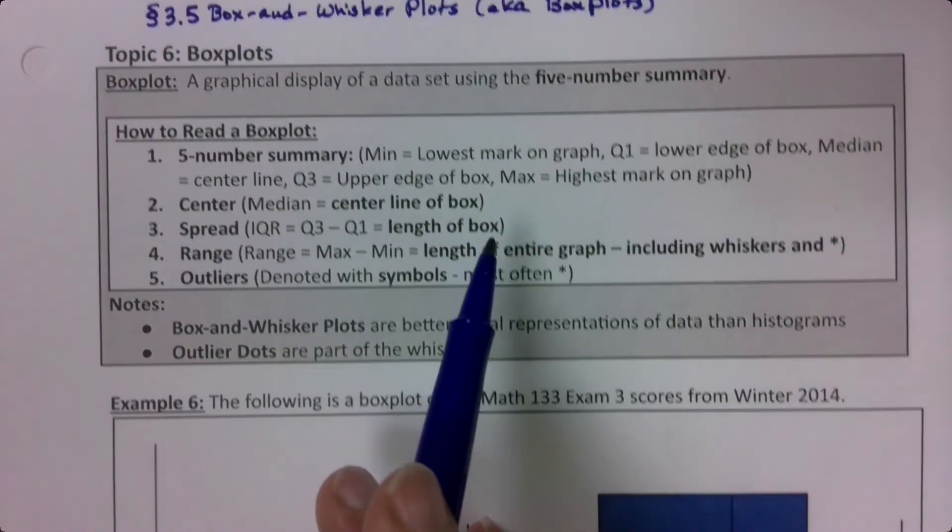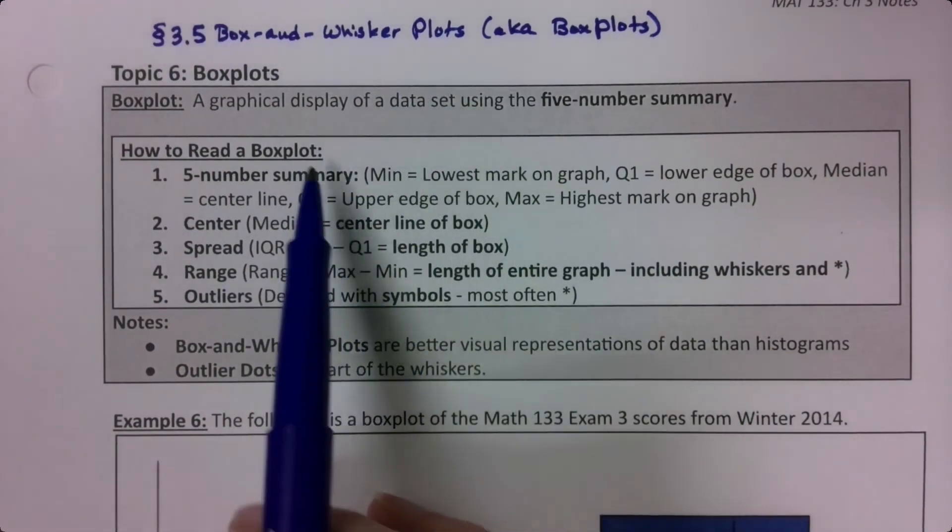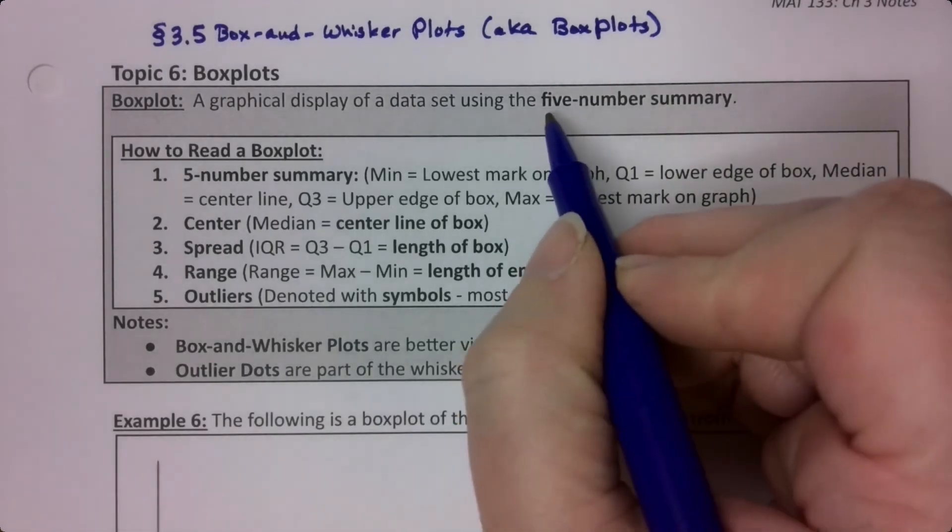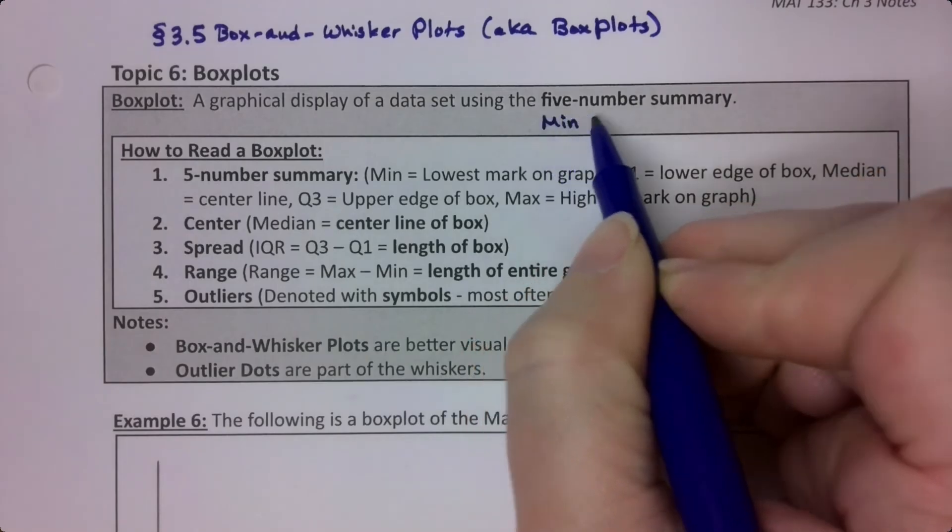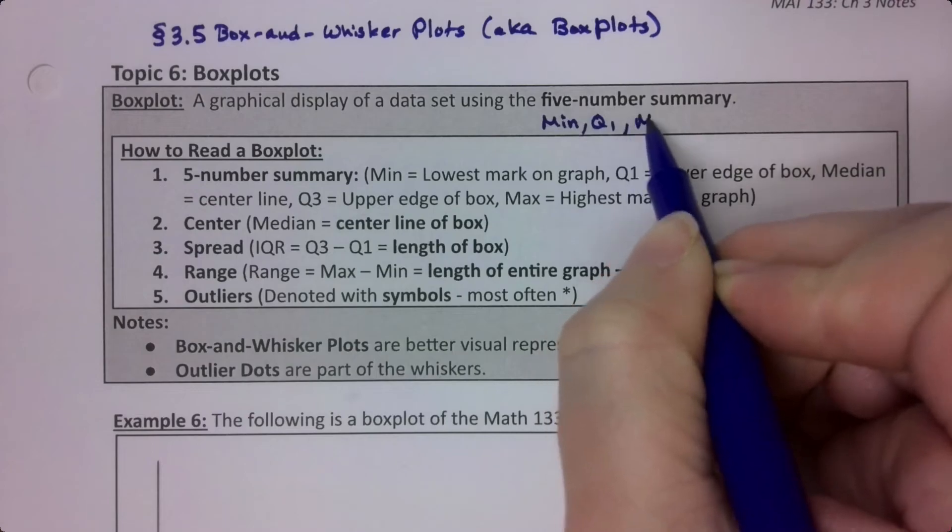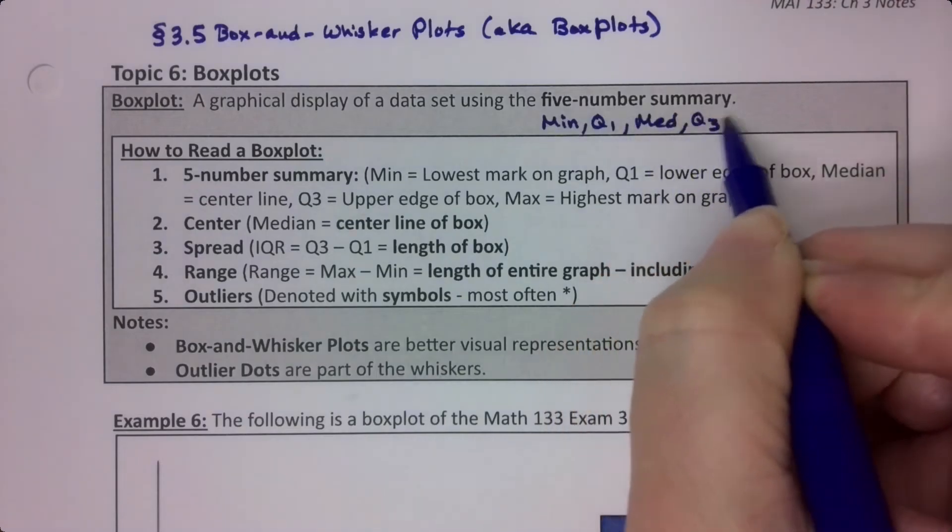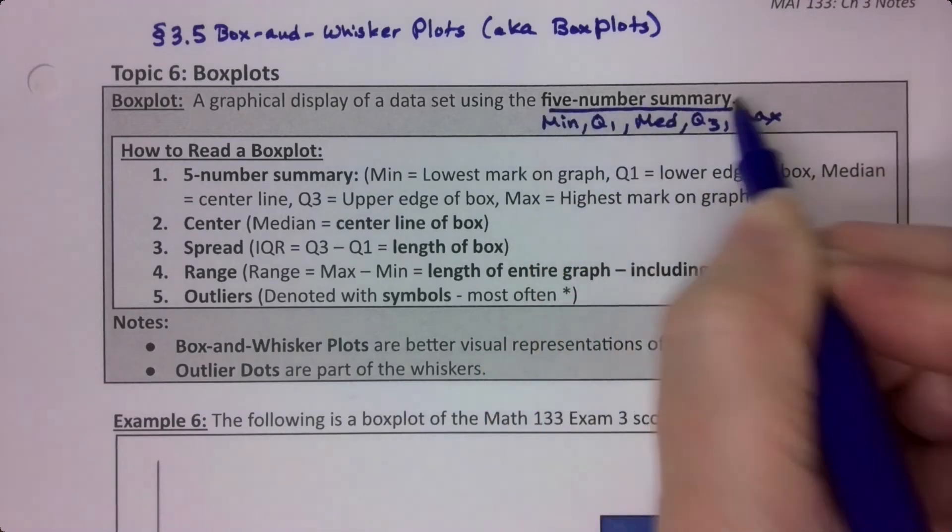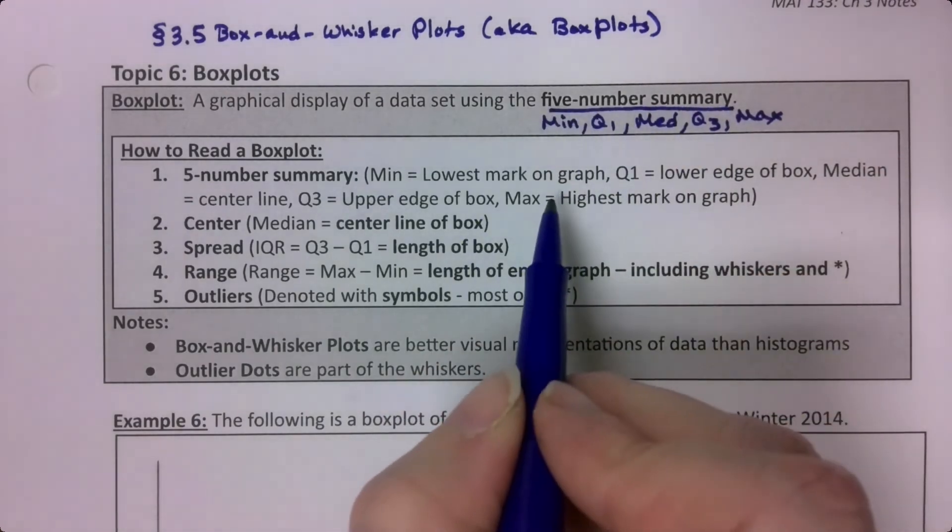So what is a box plot or a box and whisker plot? It's a graphical display of the five-number summary. The five-number summary being what we just saw: the Min, Q1, the Median, Q3, and the Max. Those are five numbers that summarize a data set.